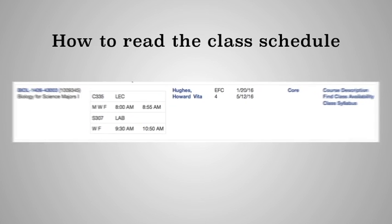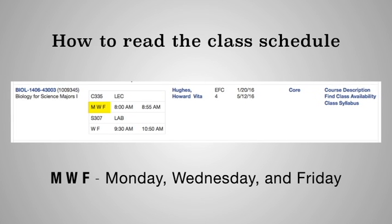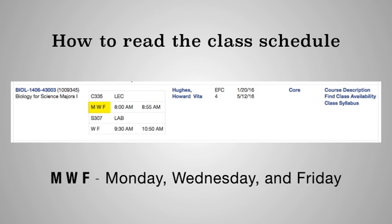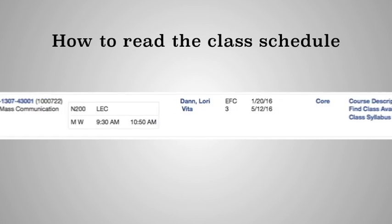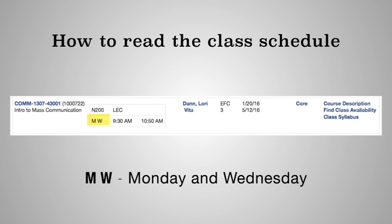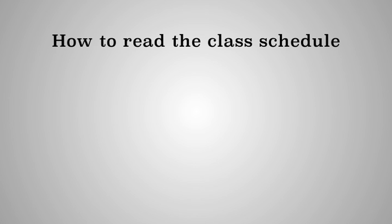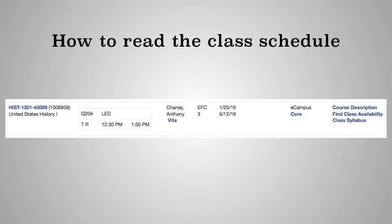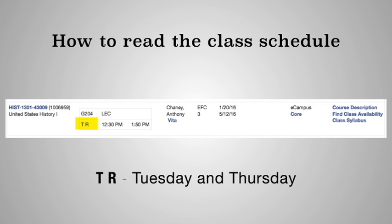When you see the letters M, W, F, this means that the class meets on Monday, Wednesday, and Friday. The letters M and W mean that the class meets on Monday and Wednesday. And when you see the letters TR, these letters indicate that the class meets on Tuesday and Thursday.